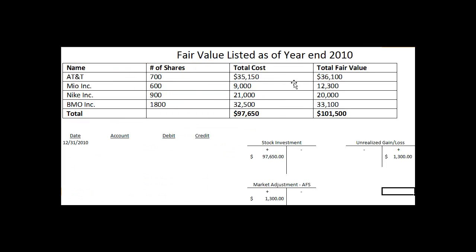Here's a blown-up version of the matrix of the stock. When we purchased all of these stocks, we had a value of $97,650 go into the stock investment account. That was our cost.